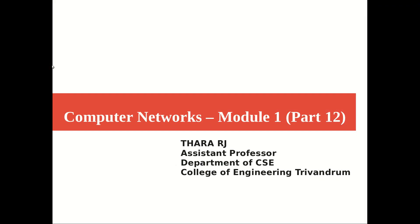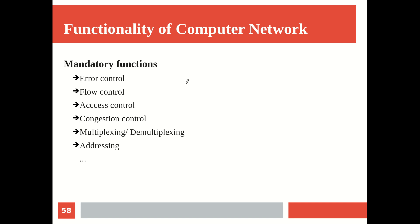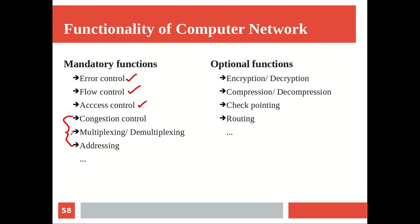Welcome to part 12, module 1 of Computer Networks. So far we covered mandatory functionalities like error control, flow control, and access control. Now we move on to other mandatory functionalities including congestion control, multiplexing, demultiplexing, and addressing. We'll also look into optional functionality after these.